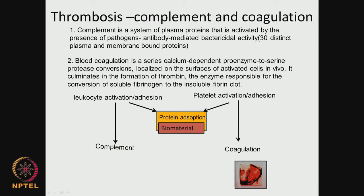Coagulation is a series of calcium-dependent proenzyme to serine protease conversions localized on the surface of activated cells, happening in vivo. Finally there is formation of thrombin — an enzyme which converts fibrinogen to fibrin. Fibrin is an insoluble blood clot. When there is a wound and blood comes out, after some time it starts clotting — that is fibrin, formed from fibrinogen by the enzyme thrombin.